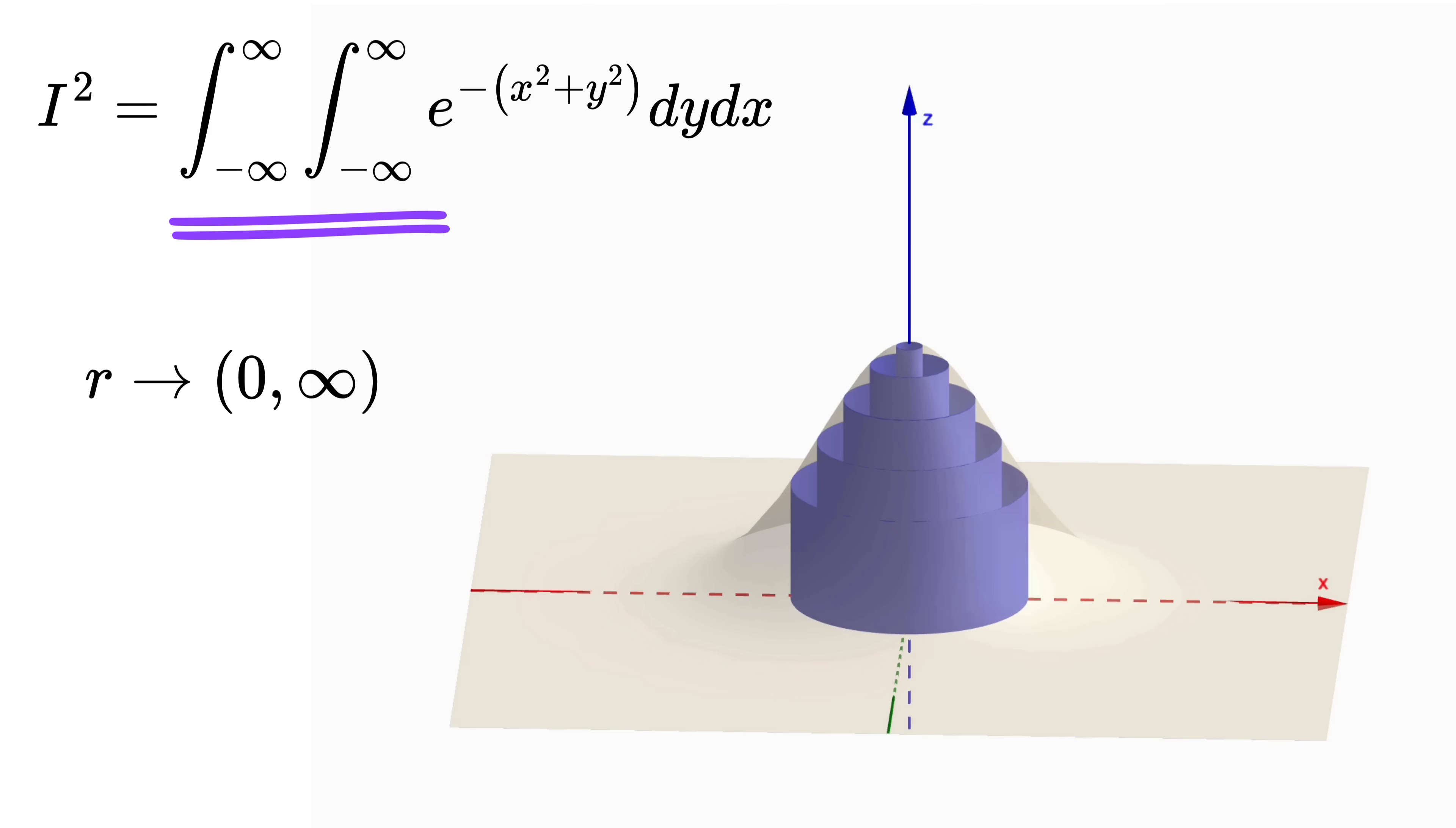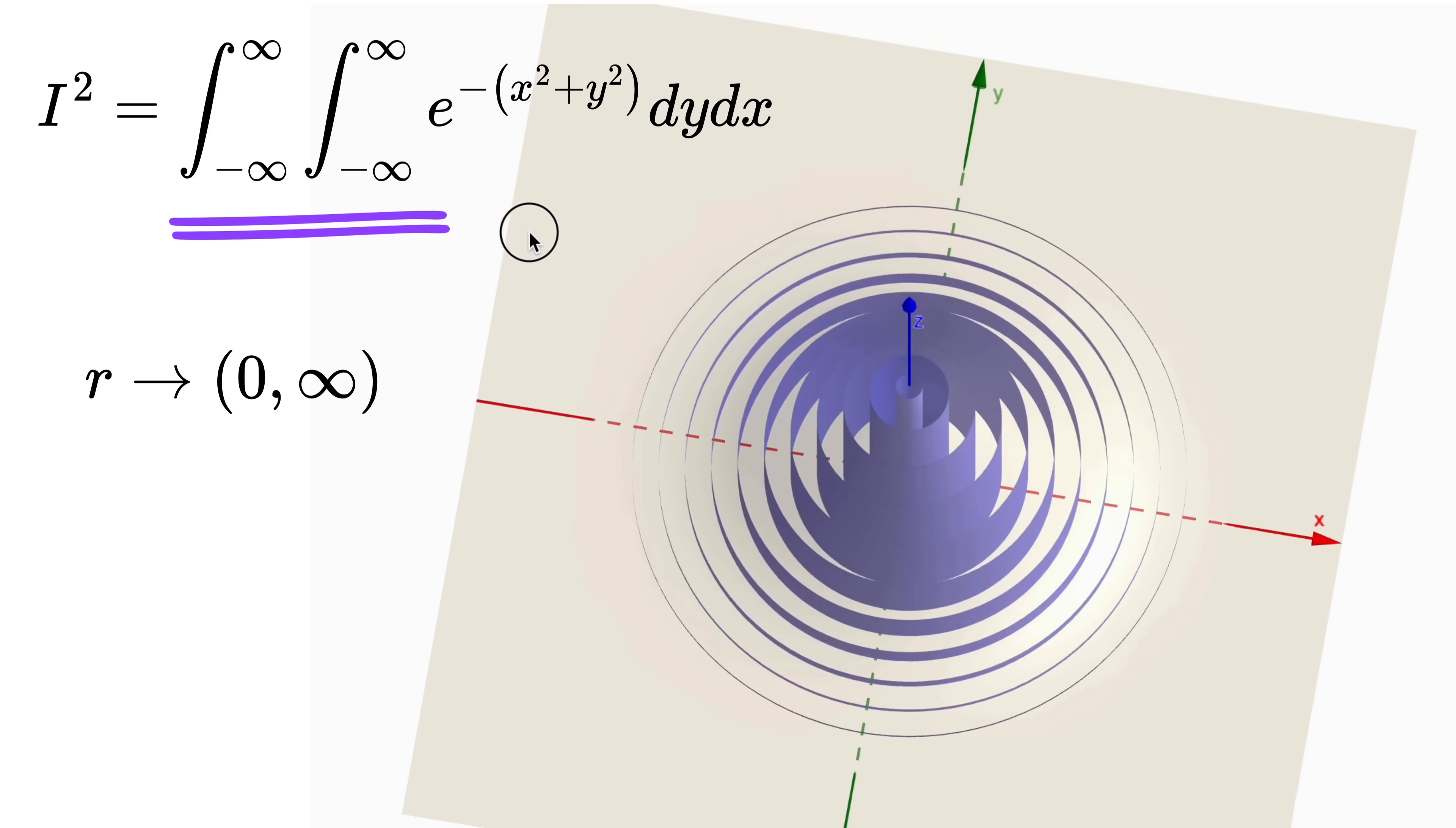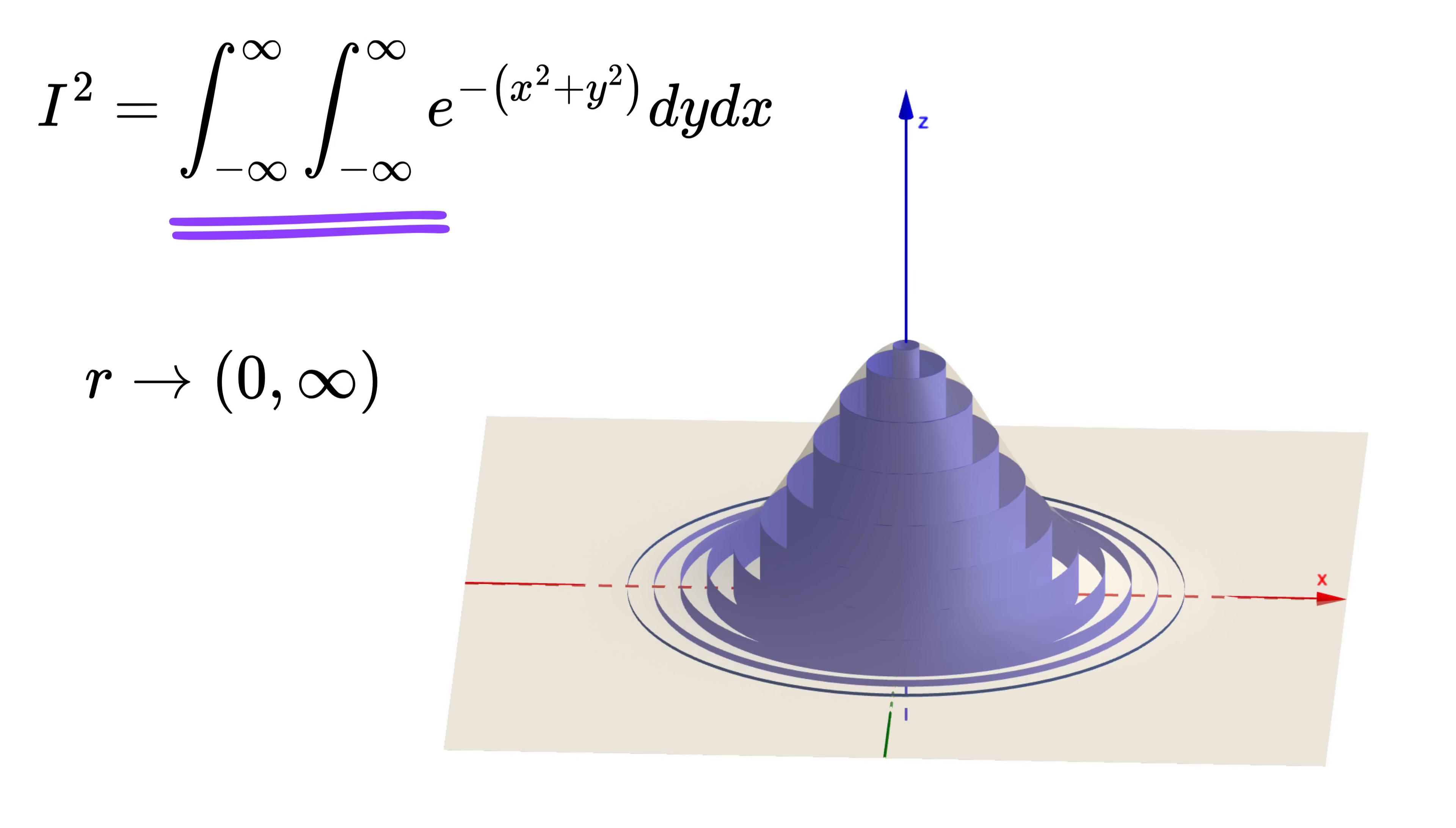You can see that we can represent this shape as a collection of thin little hollow cylinders or cylindrical shells under this surface like this. So when we add up all those little cylinder volumes across the whole plane, we get the total volume under the surface, exactly what the double integral is trying to calculate.